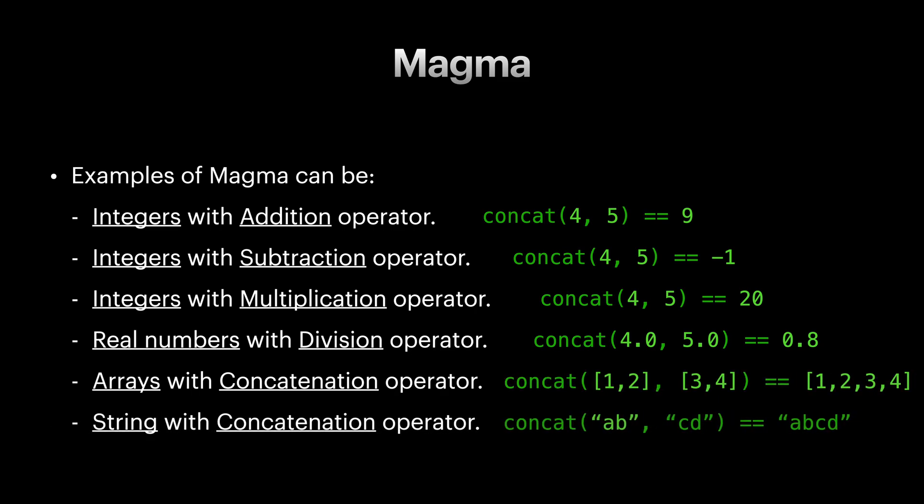All right, let's add more assumptions on magma and create more structures. Our next structure is semigroup. Semigroup is a magma, meaning it's a set with concat operation, but in semigroups concat operation follows an extra requirement: concat needs to be associative.